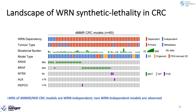Combining all these different data sets, we compiled a landscape of Werner dependency across 60 unique microsatellite unstable mismatch repair-deficient colorectal cancer models. Overall, we found about 90% of MSI models are Werner dependent, but there is a rare subset which are Werner independent. Werner dependency was observed in models from primary and metastatic disease, in different types of models including cell lines, organoids, and PDX-derived 2D models, and was completely independent of the underlying driver lesion — for example, whether it was a KRAS or BRAF mutant. In contrast to immunotherapy response, Werner dependency appeared to be independent of the overall mutational burden.